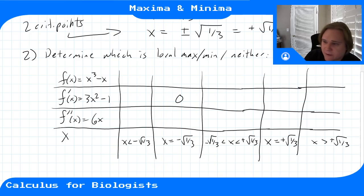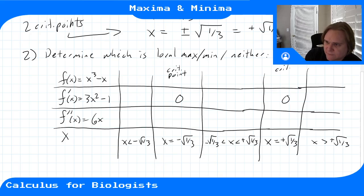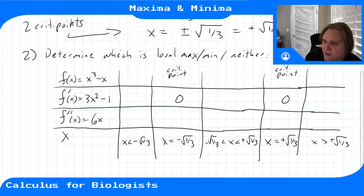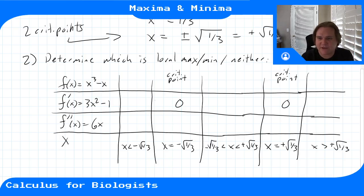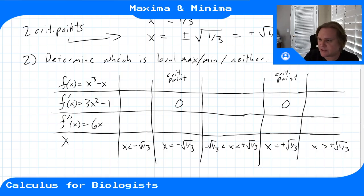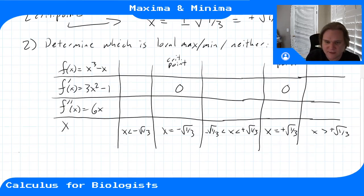These are critical points where the derivative is zero, and we're trying to classify them. We check the sign of the derivative to the left and right of each critical point, which tells us whether the function is increasing or decreasing up to that point.